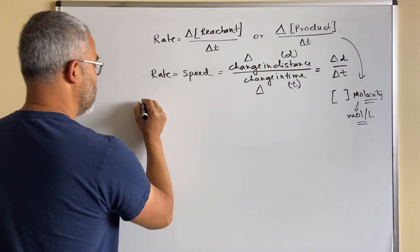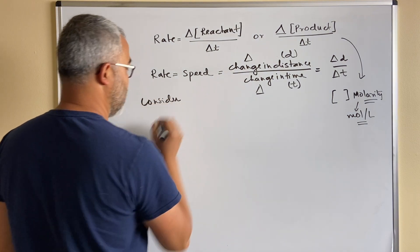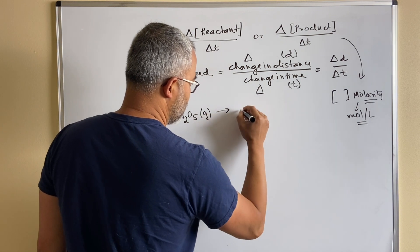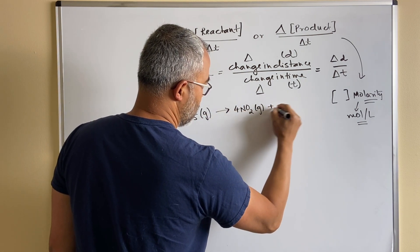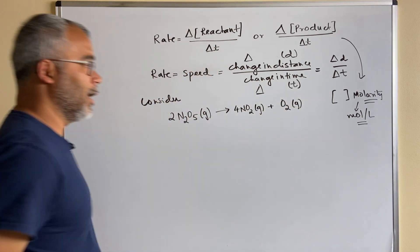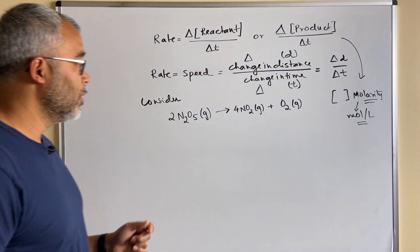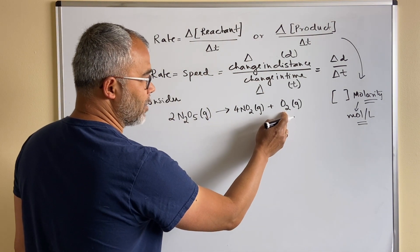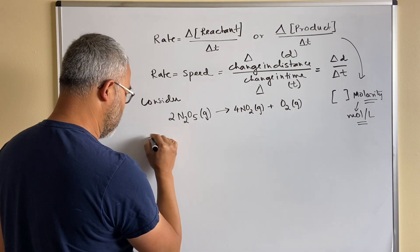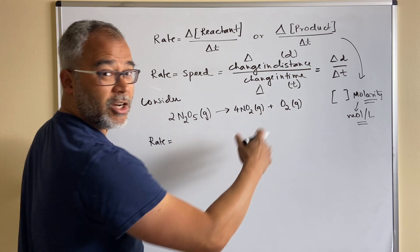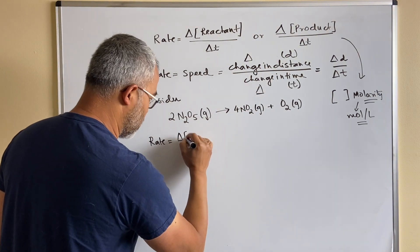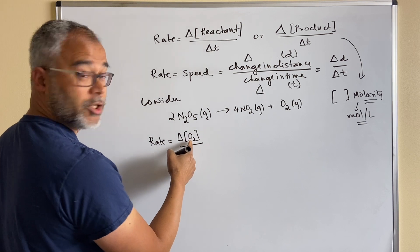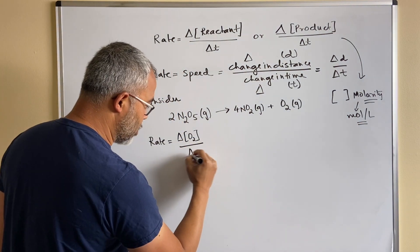Let's consider the reaction: 2N₂O₅ (gas) → 4NO₂ + O₂. Let's understand the rate of this reaction. We can write different expressions for the rate based on what we just learned. If we define the rate with respect to oxygen, it would be the change in the concentration of O₂ — the molarity of oxygen — over the change in time.